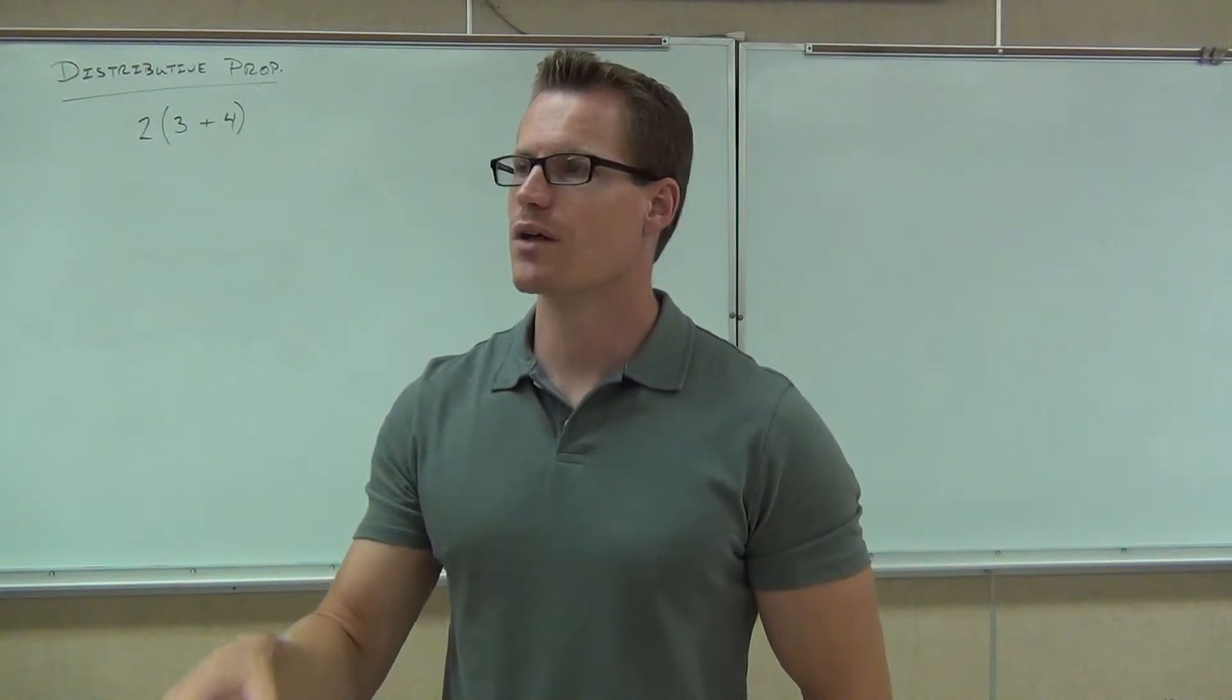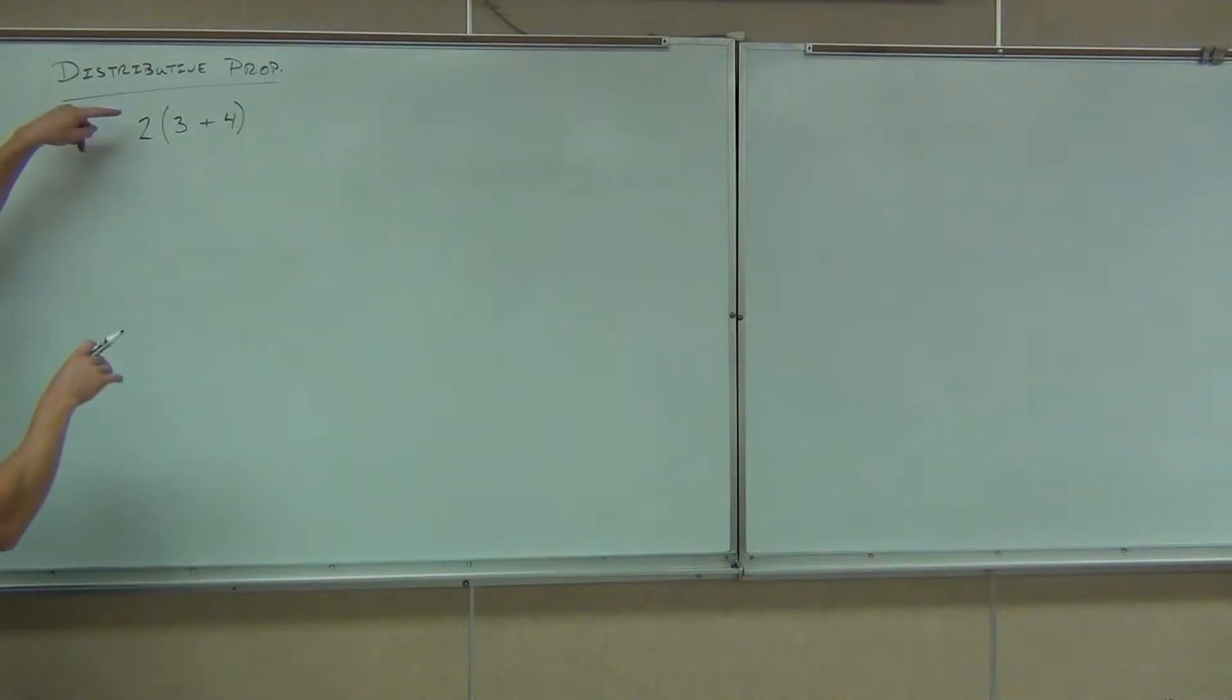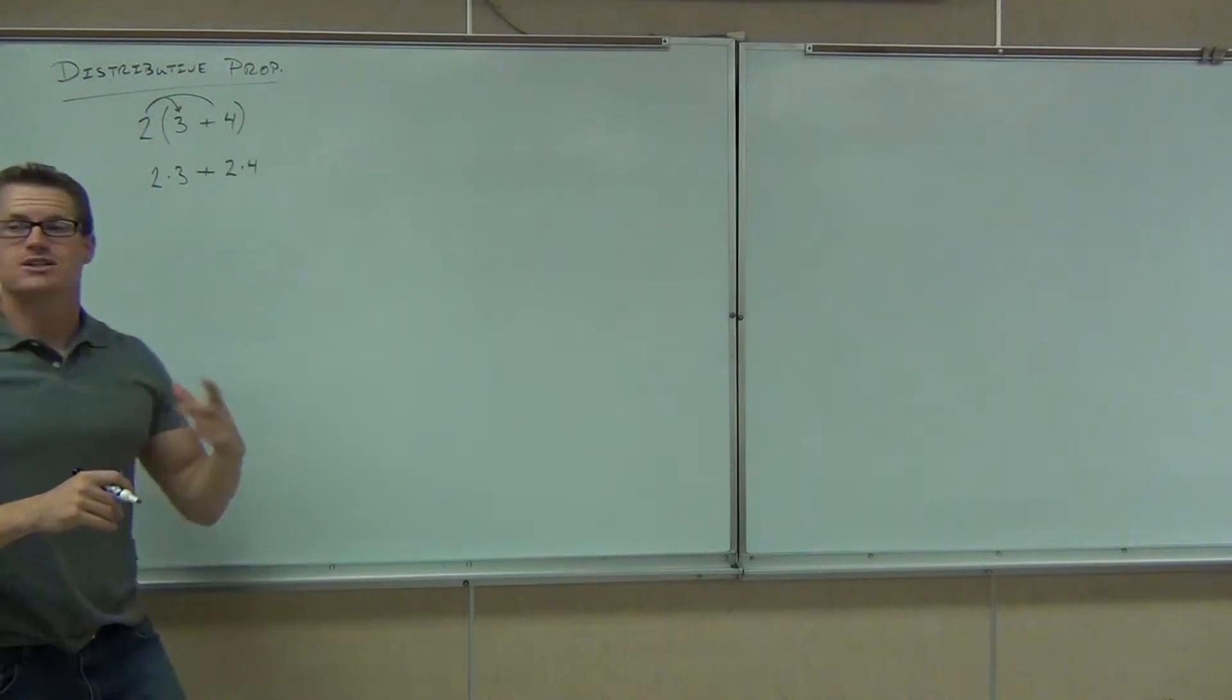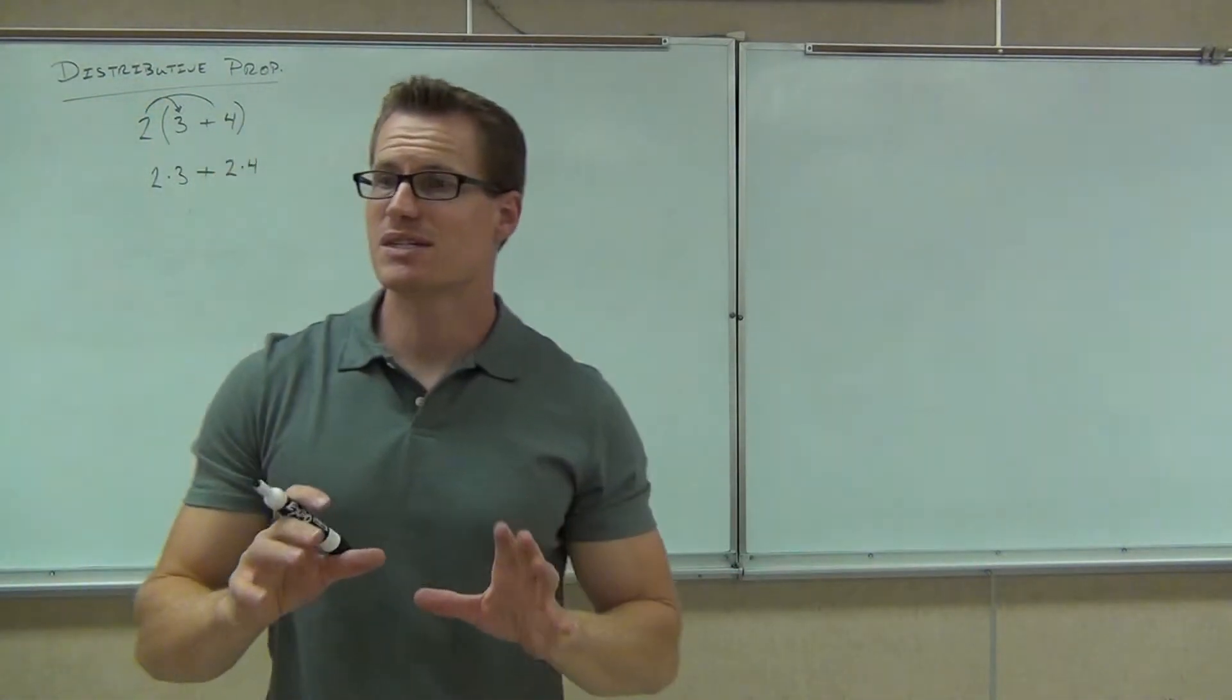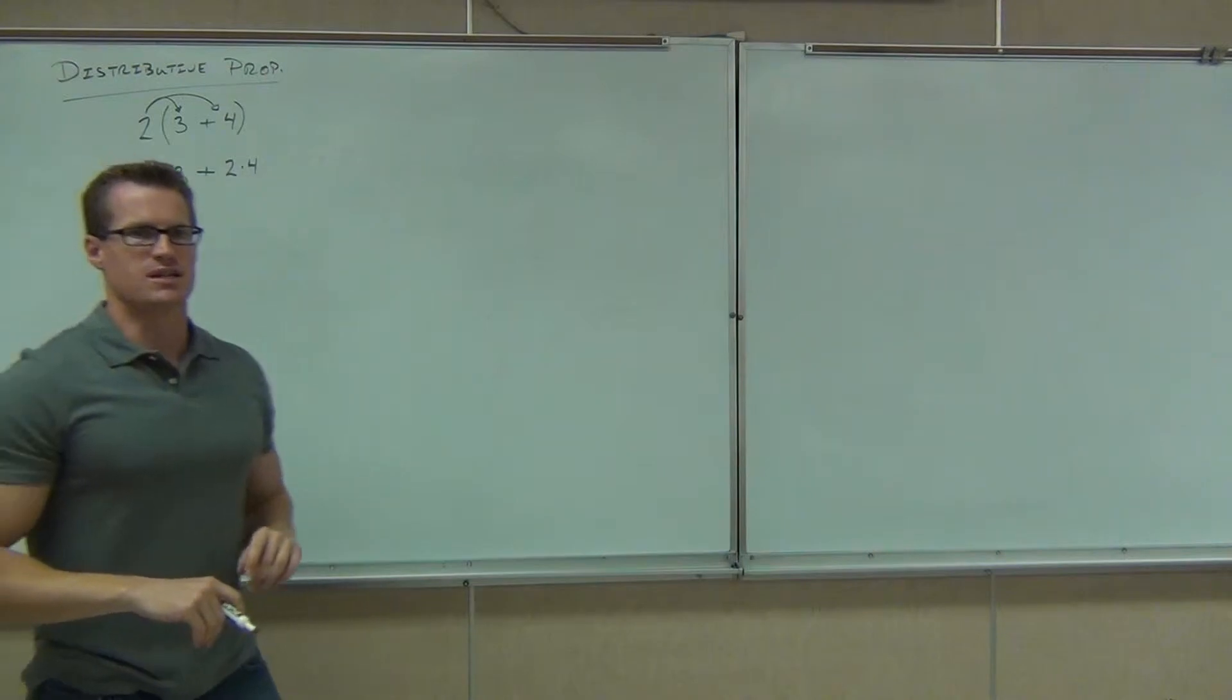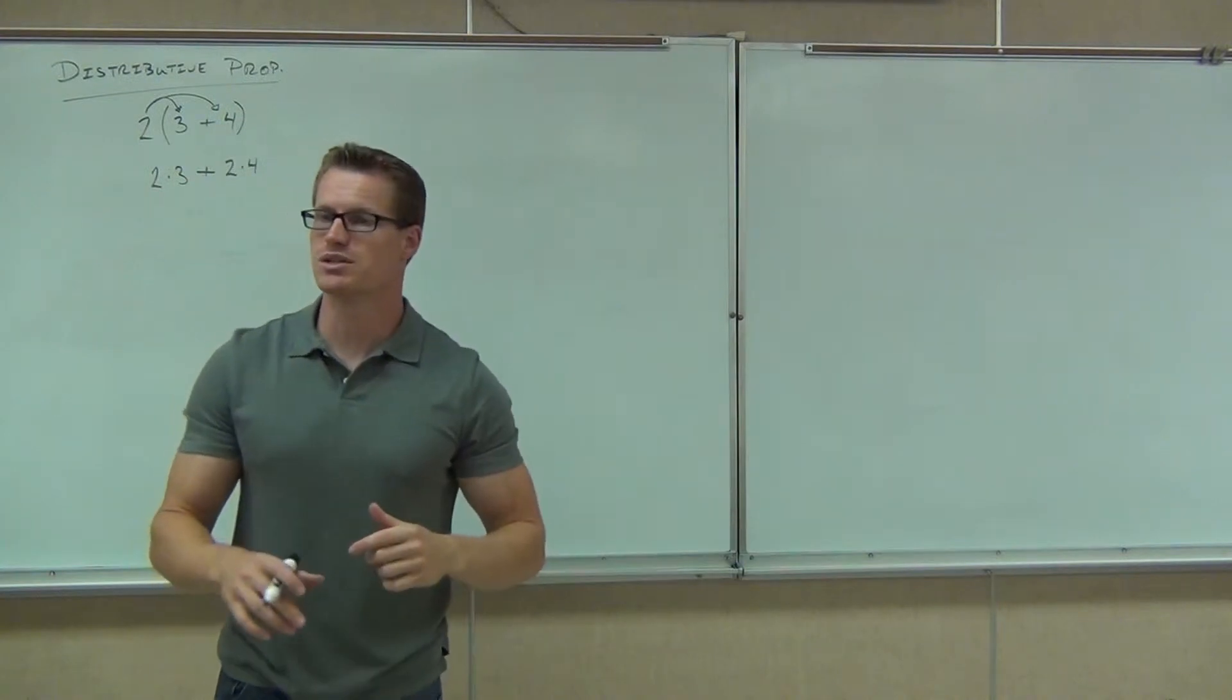Now, I also gave you another option or another way that you could get the same answer and the way that you get the same answer was if I took this number and I multiply it by three, then I add it and multiply it by four. Notice the two is being multiplied by three, the two is being multiplied by four. If I do that, I should and will get the same exact answer. So let's see if that works. Distribution says whether you add first or multiply first doesn't matter as long as you multiply by every term inside of your parentheses.